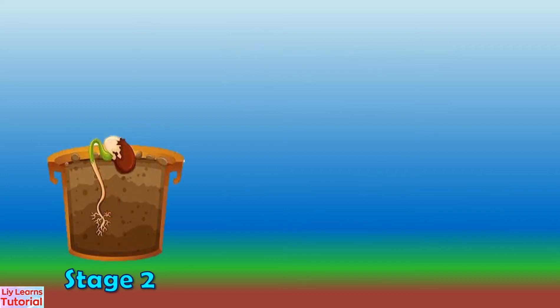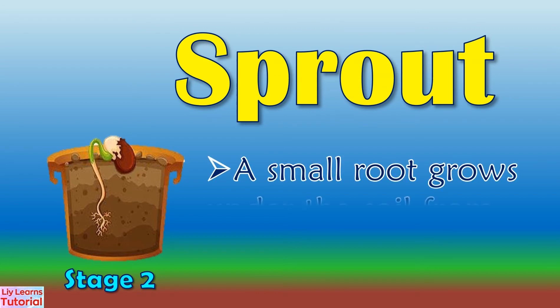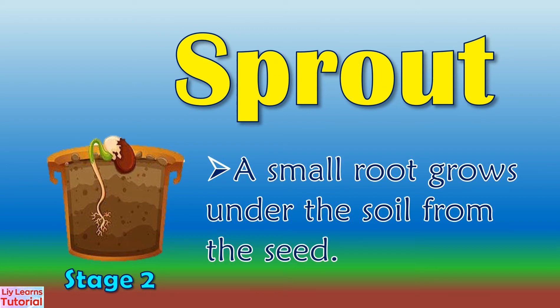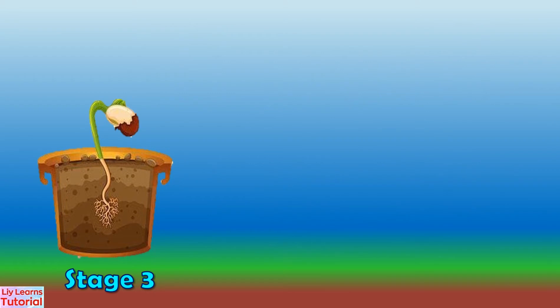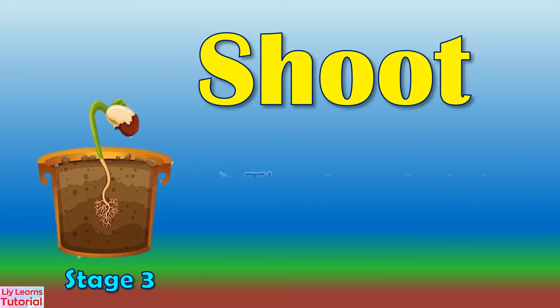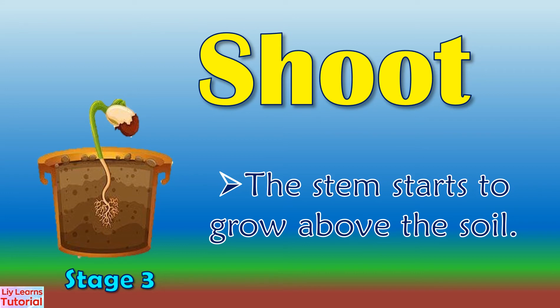Stage 2: Sprout. A small root grows under the soil from the seed. Stage 3: Shoot. The stem starts to grow above the soil.